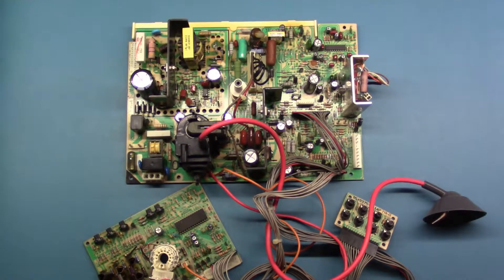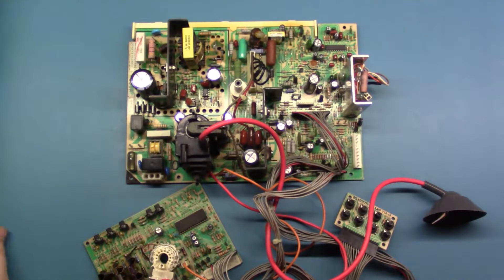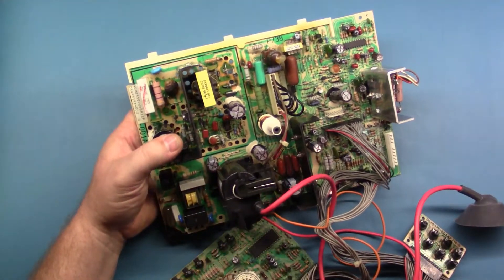Somewhat similar to the U2000, there is a jumper here - W159 - that you can see here that has been lifted and removed from the circuit.